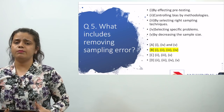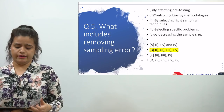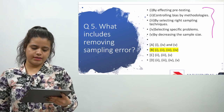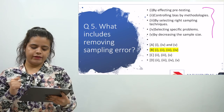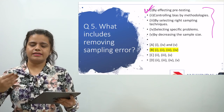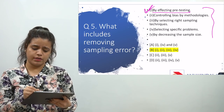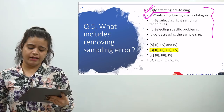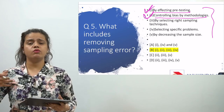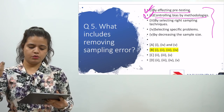The last question is: what includes removing sampling errors? It is very important to know how to remove sampling errors. Looking at the options — the first is by effecting pre-testing. This is true: through pre-testing and seeing results, we can always remove sampling errors. The second is by controlling bias through methodologies — it is very important to use such methodologies to reduce bias and thereby reduce sampling errors. So these two options are correct.